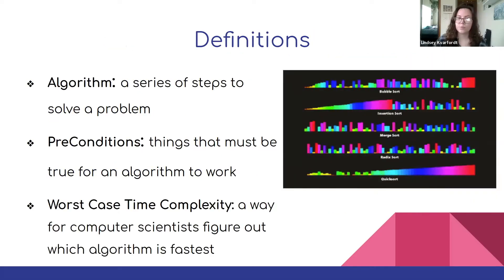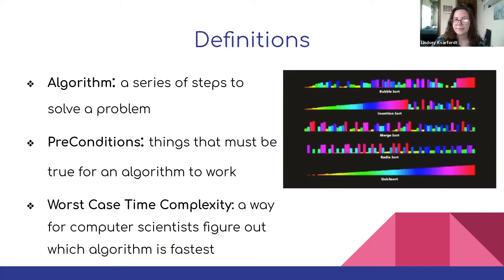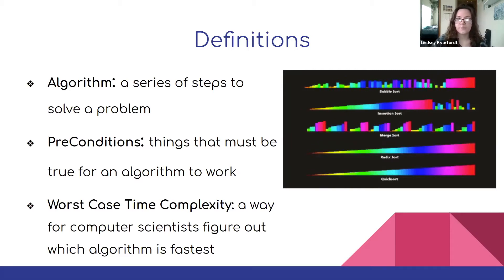We're going to start off by defining some words that you might not be familiar with. An algorithm is just a series of steps that are used to solve a problem. Preconditions are things that must be true in order for your series of steps to accurately solve your problem. And the worst case time complexity is how computer scientists determine which algorithm is fastest at solving your problem. To the right, we're seeing how five different algorithms solve a specific problem, which is sorting a set of numbers.